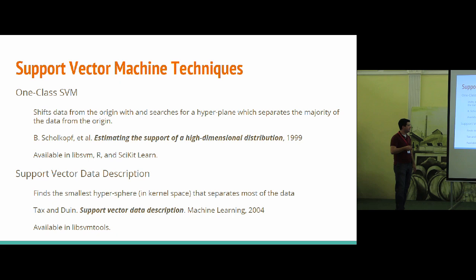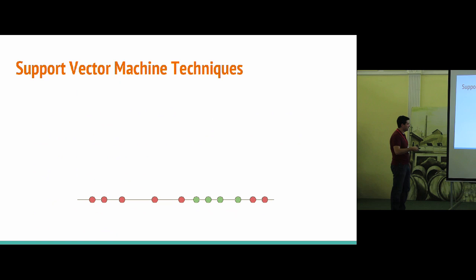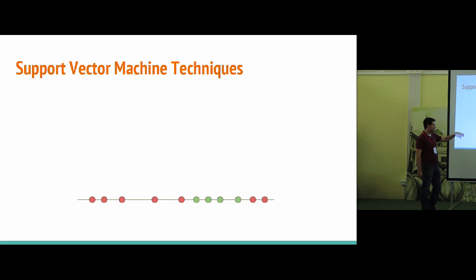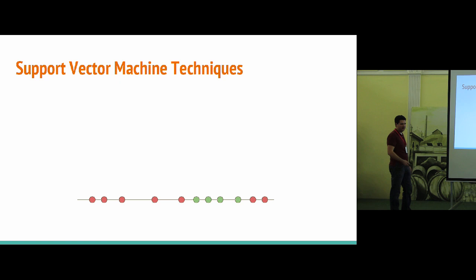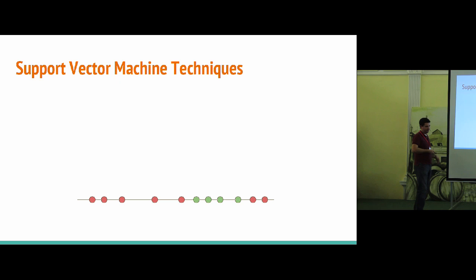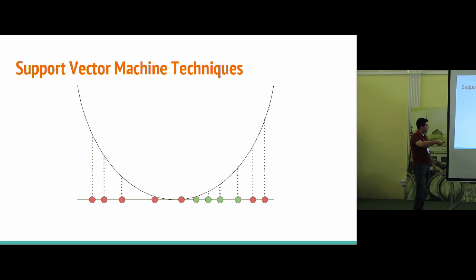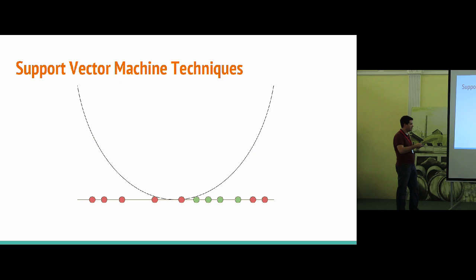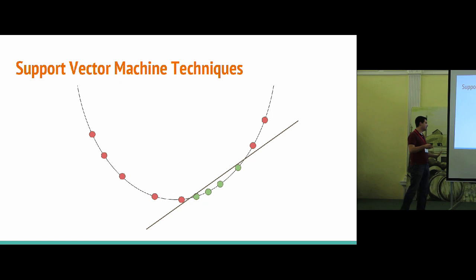Most of you probably know about support vector machines, but just in case — here's a simple explanation. Imagine a one-dimensional dataset where we want to separate red points from green points. Drawing a line to do that in one dimension is completely impossible. But if we project the data up into a higher dimension using some function — or in SVM lingo, the kernel — we can project our points up, and suddenly we can find a line that separates them. The one-class SVM doesn't care about different classes; it's really just trying to find a separation of those points from the origin.